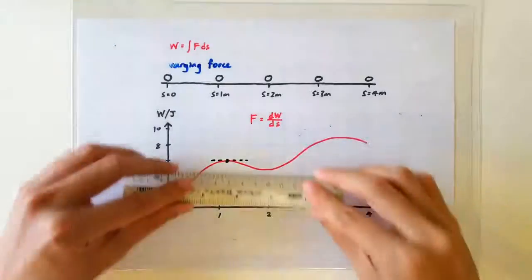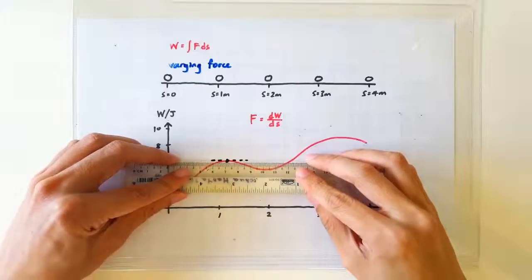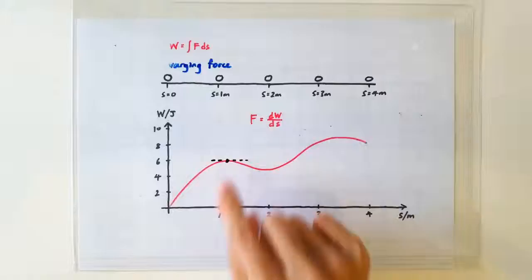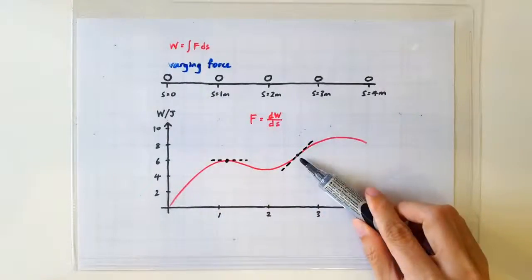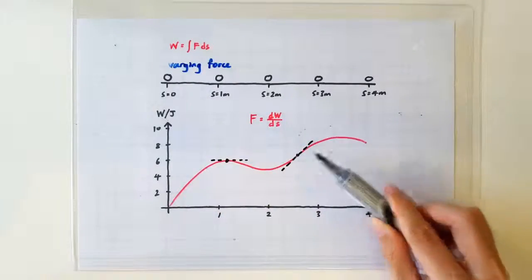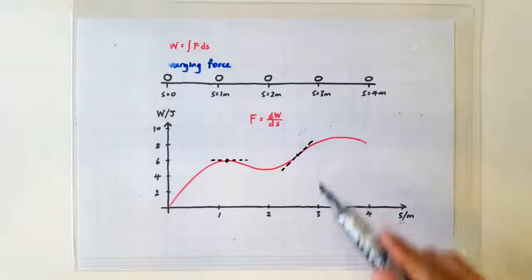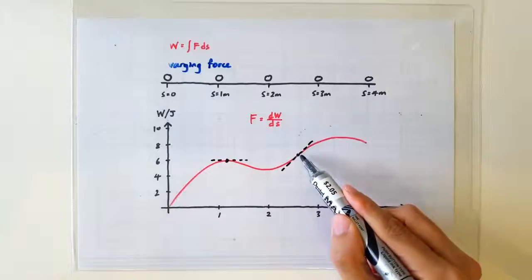For example, since the energy gradient here is 0, the force acting on the mass here must be 0. At this position, the energy gradient is very steep, implying that the joules per meter is very large. We know that the force acting on the mass is large.